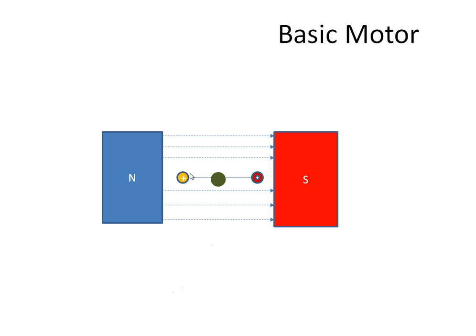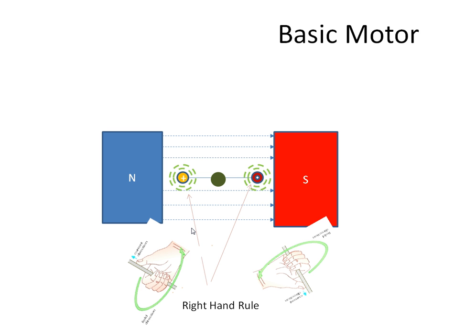We know that if we have current passing through a conductor, then we'll get a magnetic field. So around each conductor we have a magnetic field.